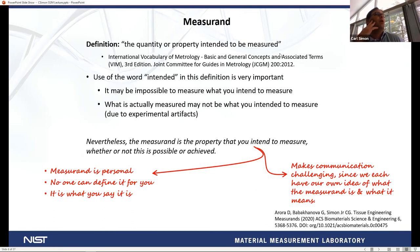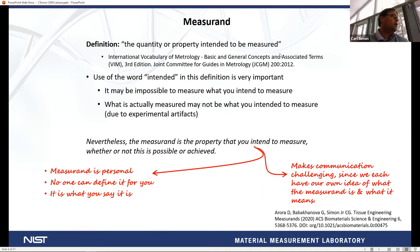Measuring is a really important word for people that work at NIST. It's defined by the VIM as the quantity or property intended to be measured. The use of the word 'intended' is really important because it may not be possible to measure what you want, and what you measure may not be what you intend — there could be artifacts. The measurement is personal and can't be defined for you. This means when you're talking with people, everybody has their own idea of what the measurand is, and it makes it hard to communicate. It's really important to have these discussions when talking about complex things like tissue-engineered medical products so that everybody's on the same page.